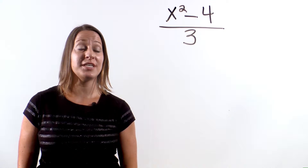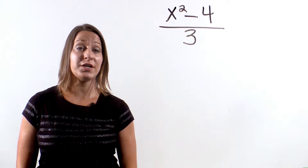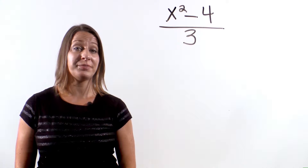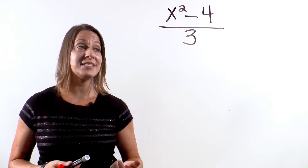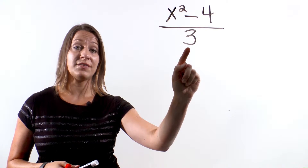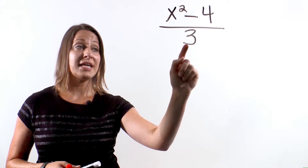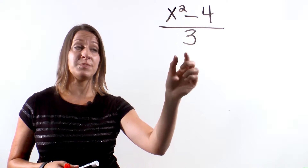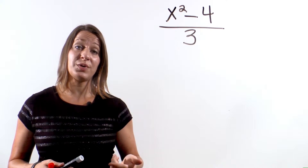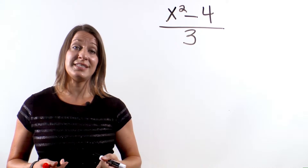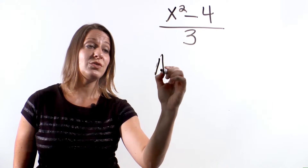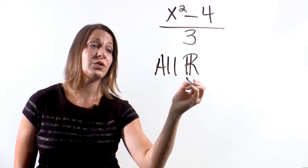Let's look at one more problem. The rational expression is x squared minus 4 over 3. Notice that there is no variable in the denominator. This means all possible real numbers could be a value of x, because the x variable is never in the denominator. The 3 will always remain in the denominator, so there will never be a situation where we are dividing by 0. For a problem with only a constant in the denominator, the domain is all real numbers.